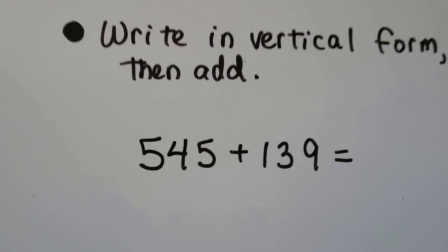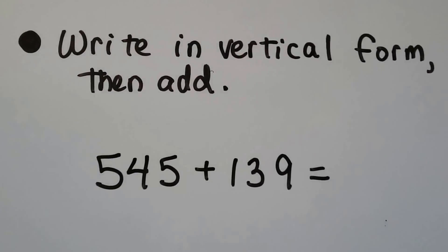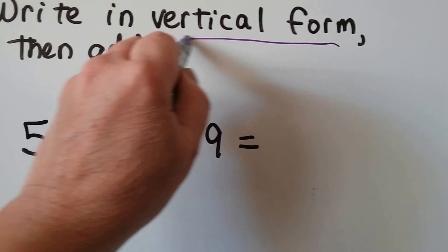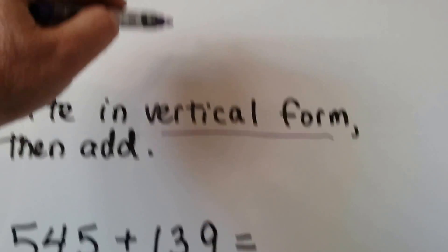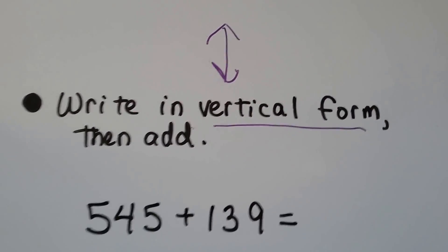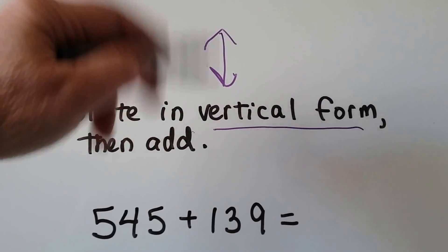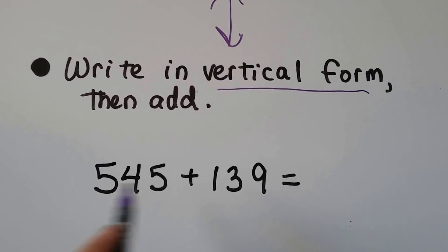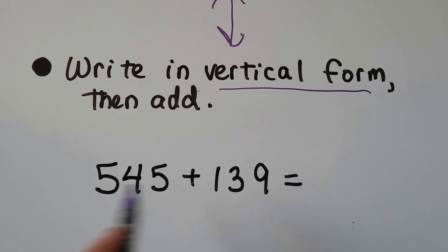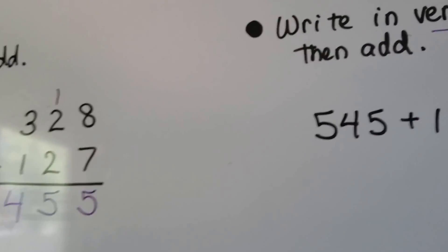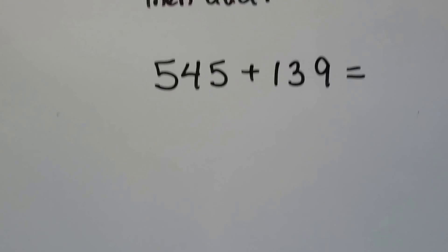Let's try this. It says write in vertical form then add. What does vertical form mean? Well, vertical form means they want us to stack them on top of each other. Vertical is going straight up and down. Horizontal is going across — that's sentence form. They want us to write it in vertical form so it's stacked.